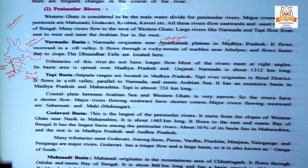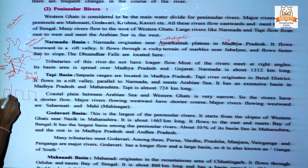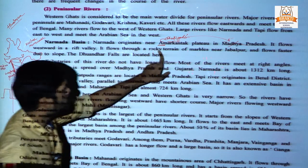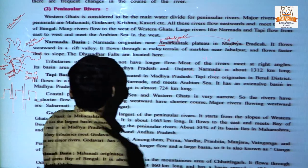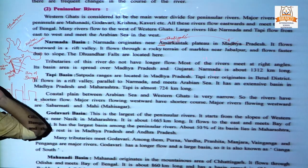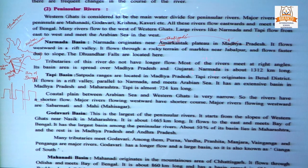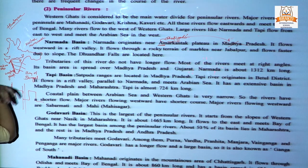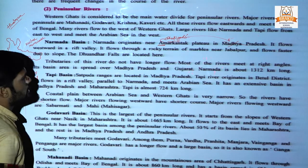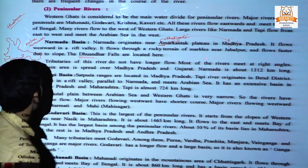A rift valley is a valley formed by geological rifting. From that portion Narmada flows. It flows through a rocky terrain of marble near Jabalpur and flows faster due to the slope. When it enters Jabalpur, the flow is faster than earlier because of the steep slope. The Dhuandhar waterfalls are located at Jabalpur.